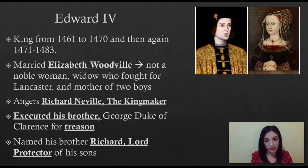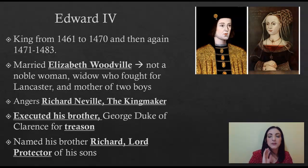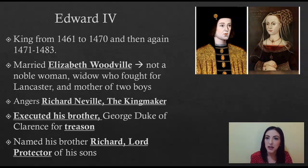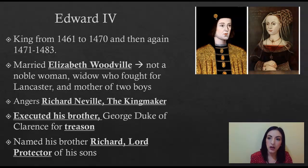Later, Edward gets older and gets out of shape. He was probably the tallest monarch — estimated around 6'4" — very athletic, handsome, and fit. But when the wars and battles are over, he becomes pretty sedentary and dies later of complications from his health. Edward and Elizabeth had many, many children. She already had two children from her previous husband, and with Edward she has a lot of daughters and at least two sons, also named Edward and Richard. So she has two legitimate sons to pass on the lineage to should anything happen to Edward IV.